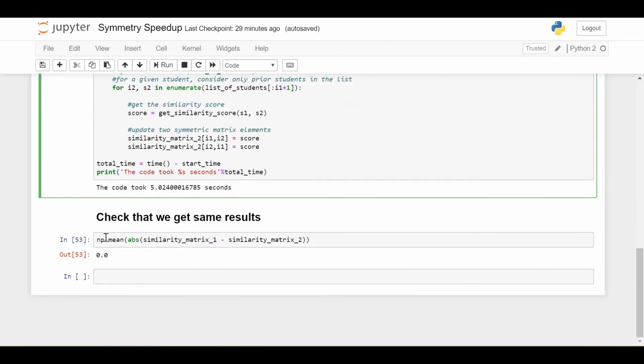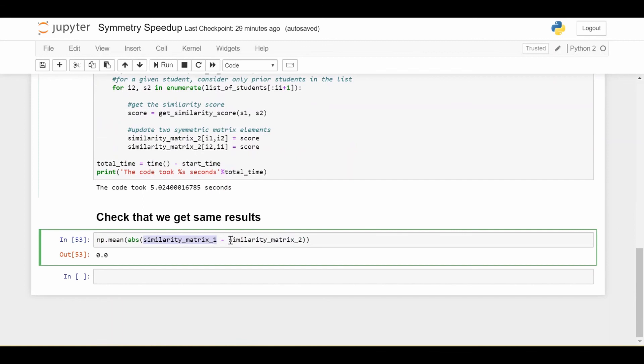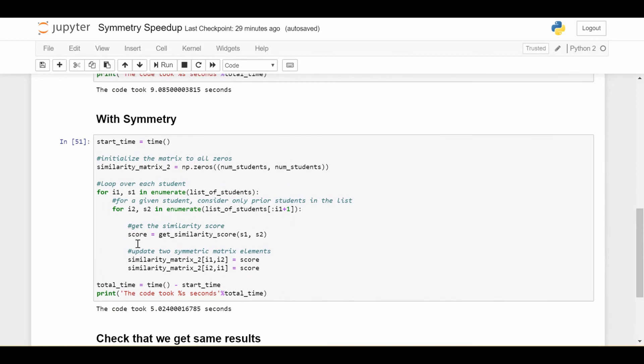Last thing, just for sanity, let's check we get the same results. So if I do the similarity matrix from the non-symmetric optimization minus the symmetric optimization, take the absolute values of the differences and take the mean, we find there's absolutely no difference between doing it these two ways. The only difference is that we do it in five seconds versus nine seconds.